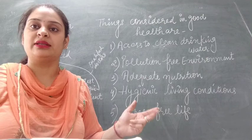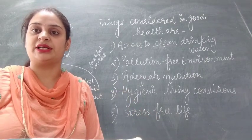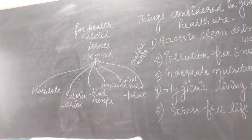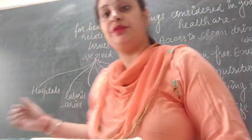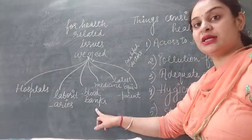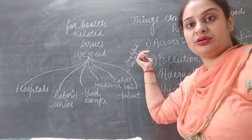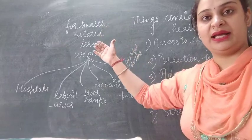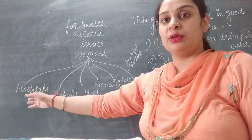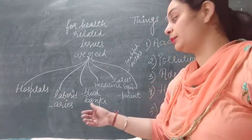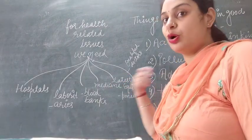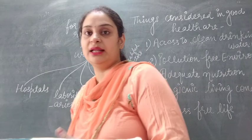When our health becomes disturbed, there could be a requirement for different healthcare facilities to help us solve our health-related problems. For different health-related issues, we need hospitals, laboratories, blood banks, medicines, latest equipment, and qualified doctors and nurses. Our country should have well-developed hospitals so that the problems of citizens can be cured easily. All these things should be kept in mind whenever we talk about health and health-related issues.